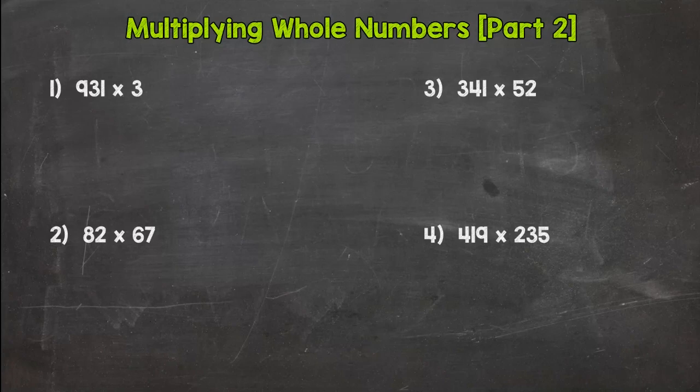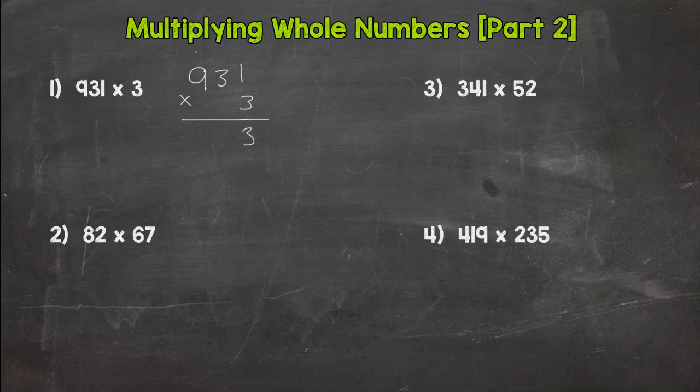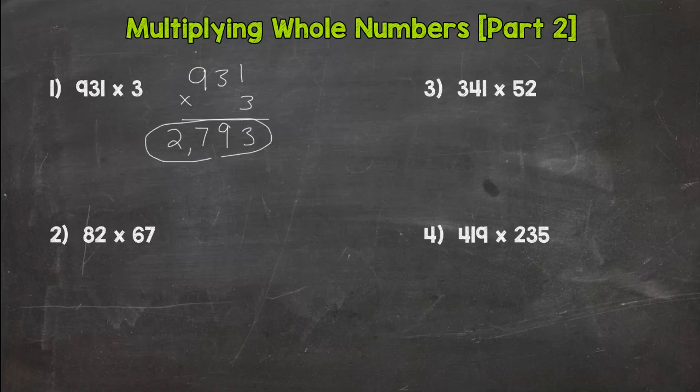We're gonna rewrite these problems vertically, which means up and down, and then just go through our multiplication process. We take the 3 to the 1: 3 times 1 is 3, 3 to the 3: 3 times 3 is 9, and 3 times 7 is 27. Put our comma in, we are done: 2,793.